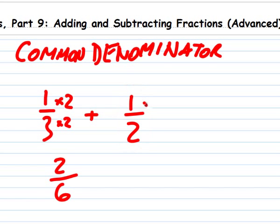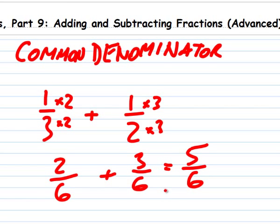And we take 1/2 and multiply the top and bottom by 3. 1 × 3 = 3, and 2 × 3 = 6. So 1/2 = 3/6. Therefore, 1/3 + 1/2 = 2/6 + 3/6. 2 + 3 = 5, so the answer is 5/6.